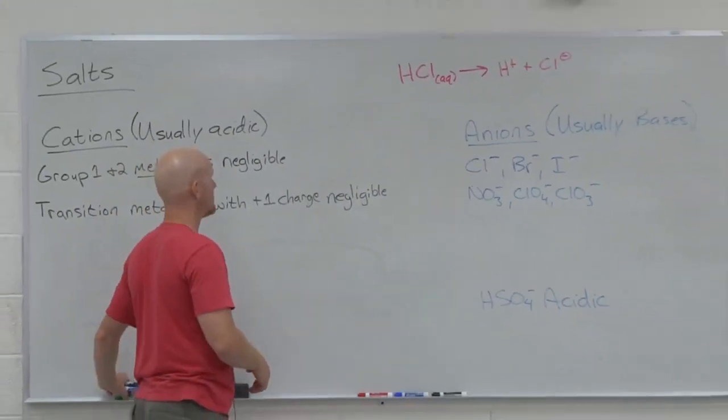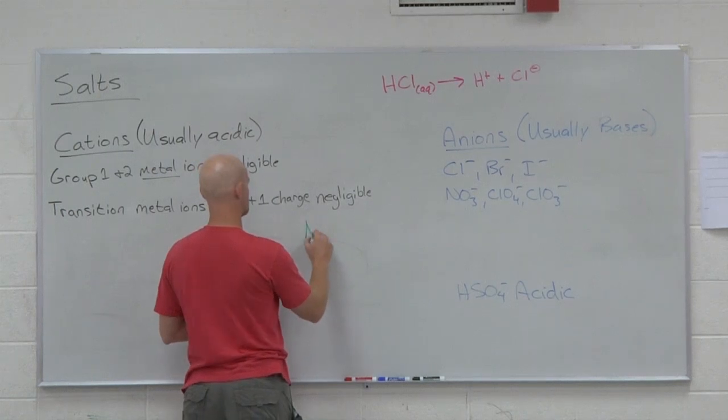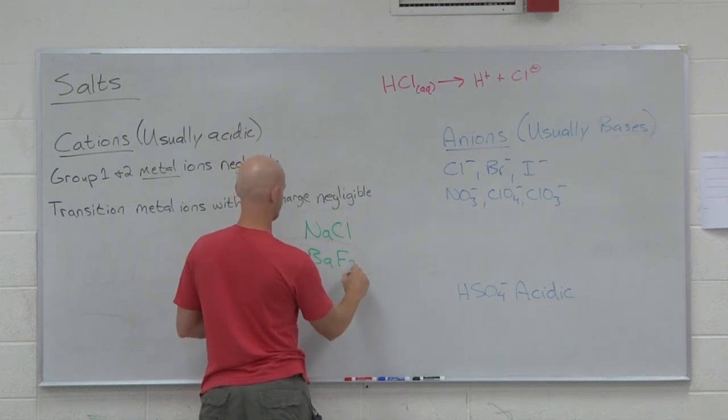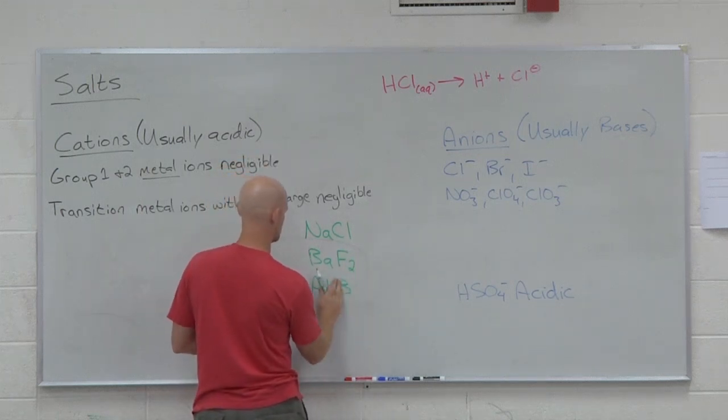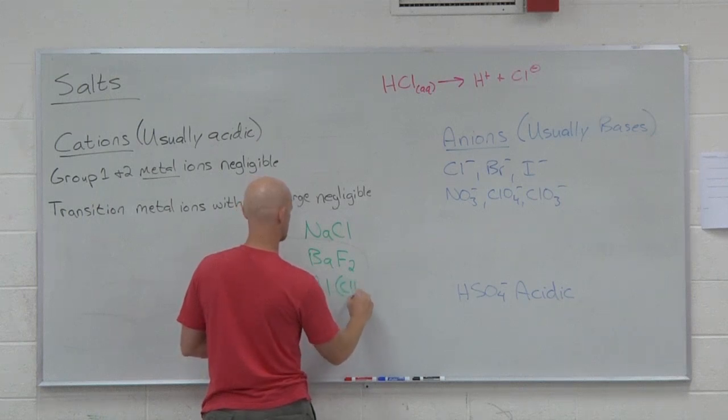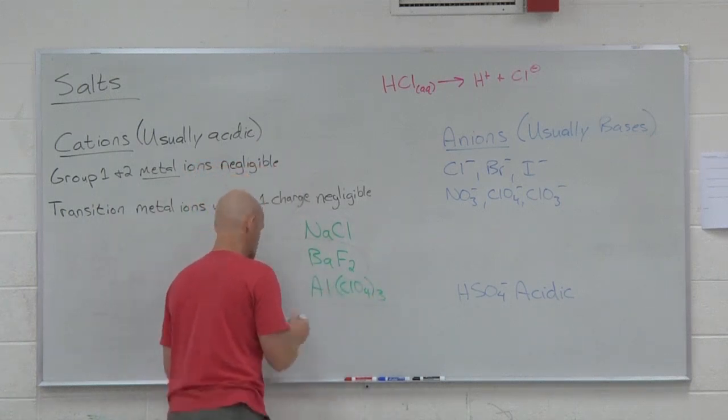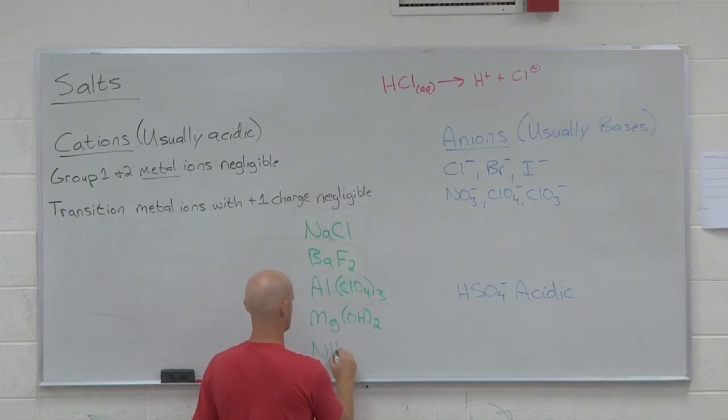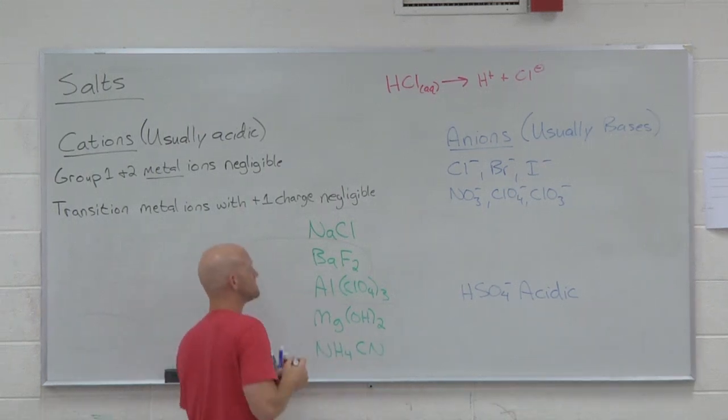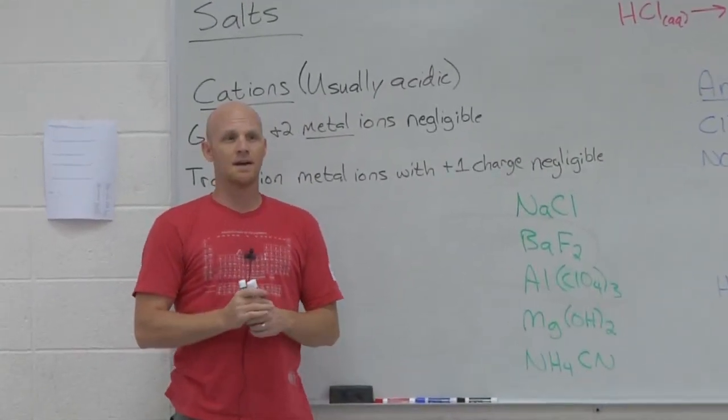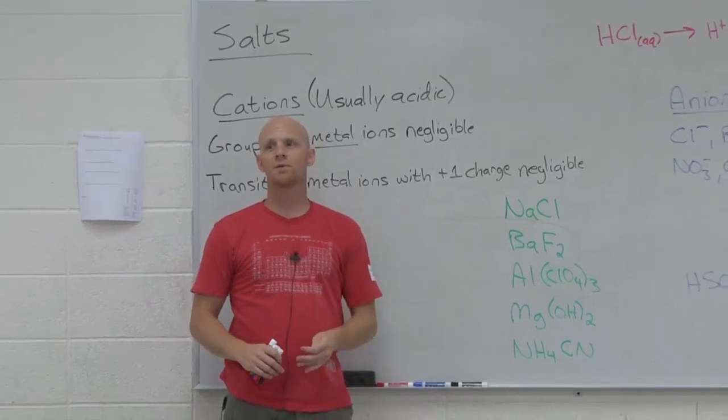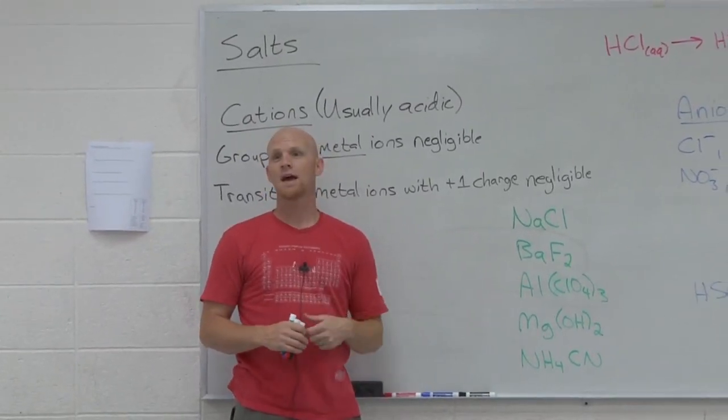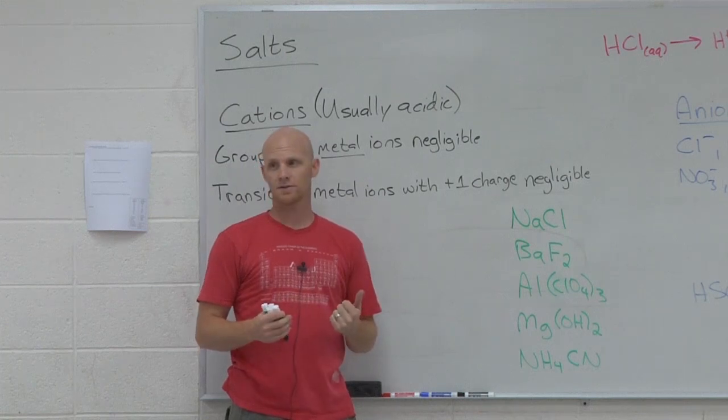Now let's look at some compounds here. Let's look at these five compounds. These are all salts. They're all ionic. We're going to figure out if each of these salts is an acidic salt, a basic salt, or a neutral salt. That's our goal.